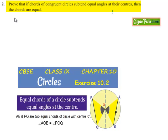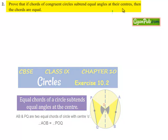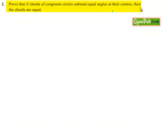Moving on to question number 2: prove that if chords of congruent circles subtend equal angles at their centers, then the chords are of equal length. Now moving on to the solution.